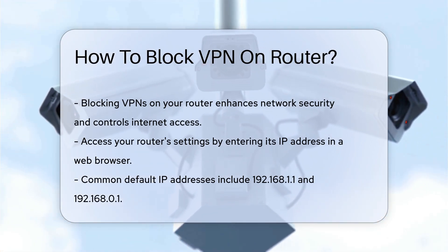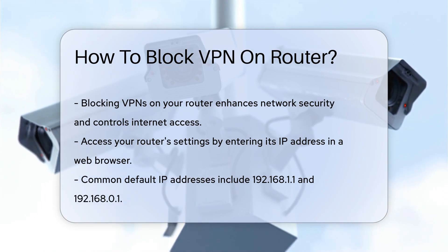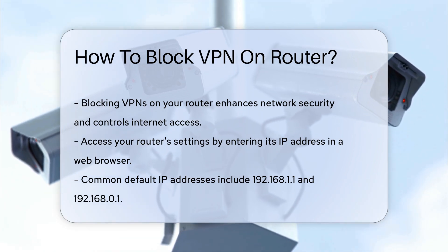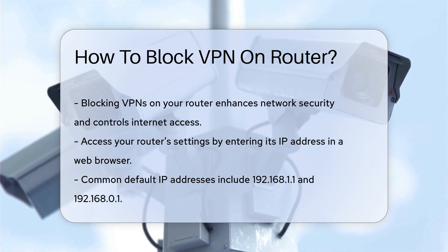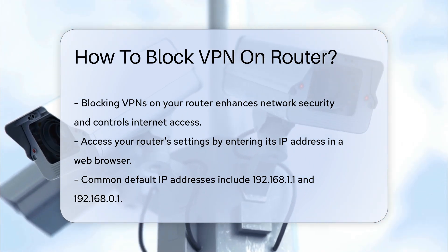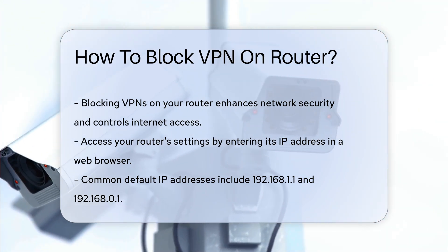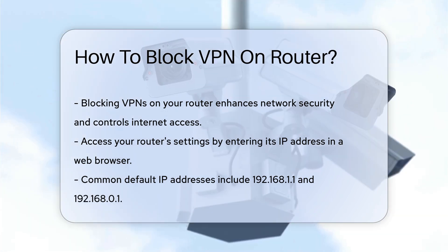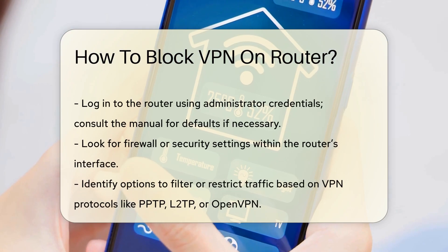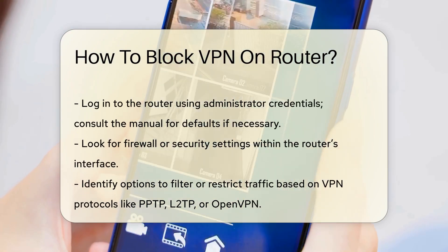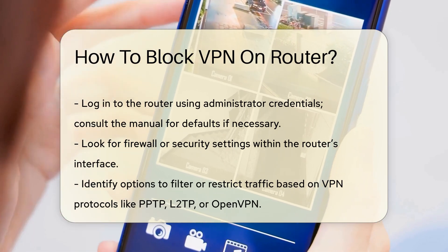First, access your router's settings. This usually requires entering the router's IP address in a web browser. Common default addresses include 192.168.1.1 or 192.168.0.1. Next, log in using the administrator credentials. If you have not changed them, consult the router's manual for the default username and password.